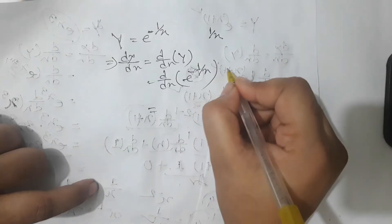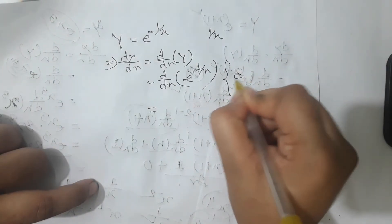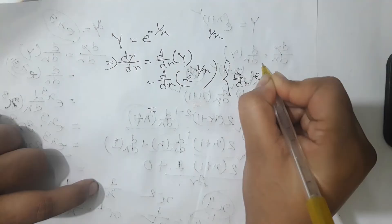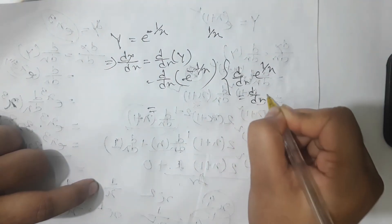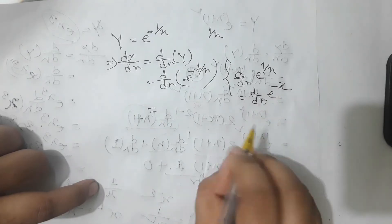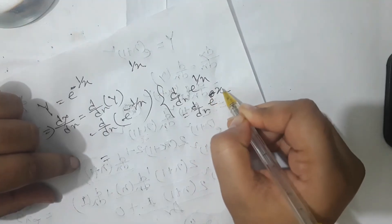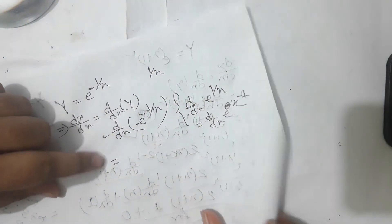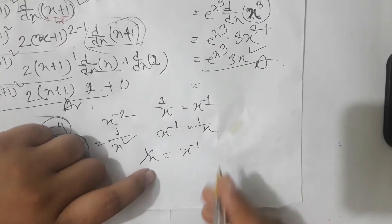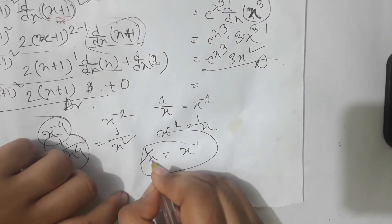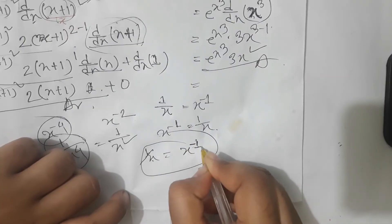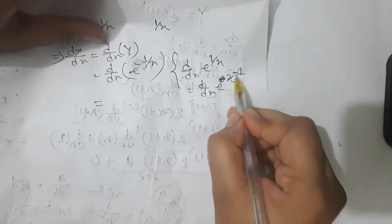Let's take d/dx of e to the power 1 by x. So you can write it down. 1 by minus minus minus 1. This one is going to do 1 by x. We have said that 1 by x is minus 1. So here we have x is minus 1.